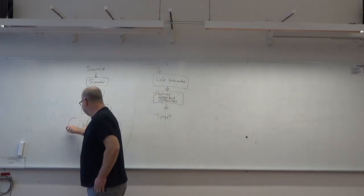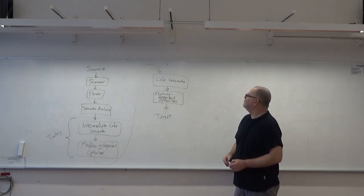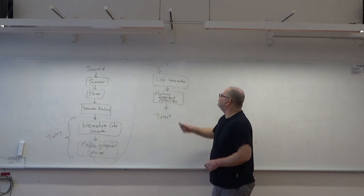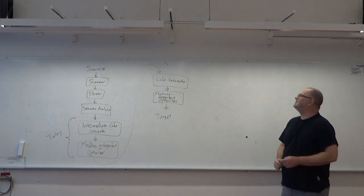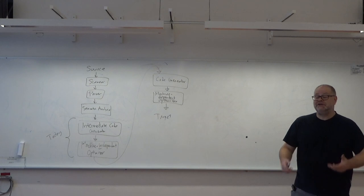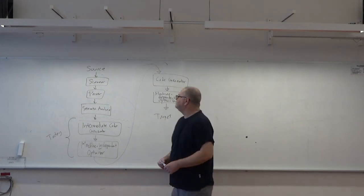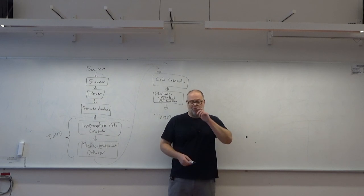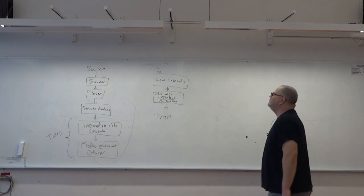Today we will talk about these two phases — intermediate code generation and optimization — and probably in the next lecture as well. We will say something about the code generator, but I think the code generator is the phase you'll have the least use of, unless you actually write compilers for real physical machines. If you write an interpreter, or use this knowledge to analyze definition files or initialization files, you don't need the code generator.